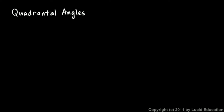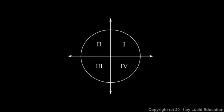We should make a few quick comments on quadrantal angles. A quadrantal angle is an angle whose terminal side lies along an axis — for example, a 0 degree angle, a 90 degree angle, 180, or 270. From what you know about sine and cosine, you should be able to pretty easily determine the value of the sine, cosine, and tangent of a quadrantal angle.